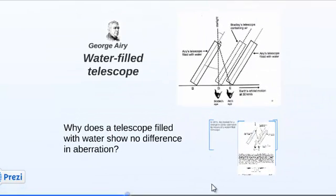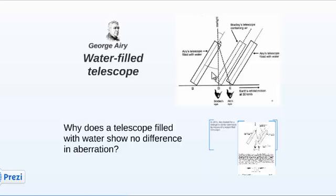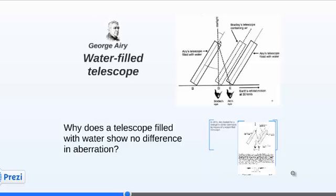Another question was raised by George Airy. He filled a telescope with water, knowing that the speed of light in water is lower than the speed of light in air. He expected to see a larger aberration term by filling the telescope with water. But the end result was that there was no difference at all. So why does a telescope filled with water show no difference in aberration? Let's have a look at how Einstein looked at the effect of aberration.